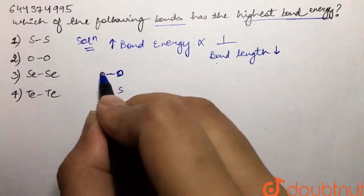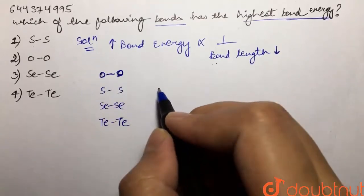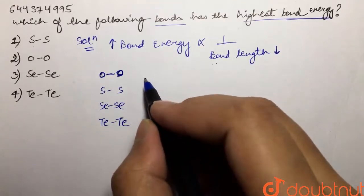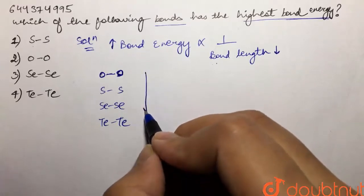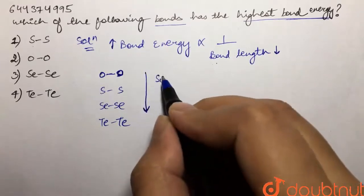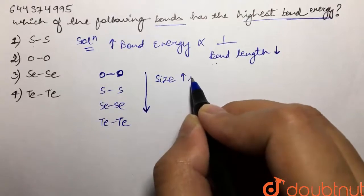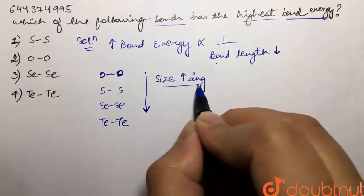tellurium-tellurium. These are the bonds they are talking to us about. So in this case, when we are moving from upward to downward, what is happening? The size is getting increased - size is increasing.